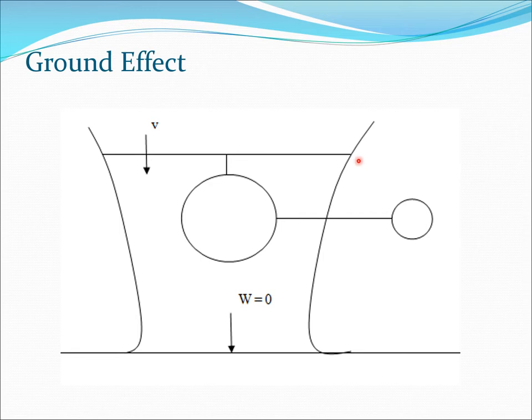If we think of the rotor, all the derivations we have done in momentum theory have presumed that there is a well-defined slipstream which goes far downstream. Essentially we had the rotor with the induced velocity v, and then the air went down and became w.